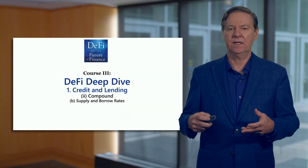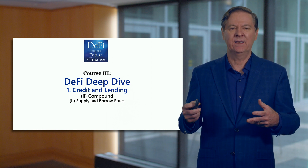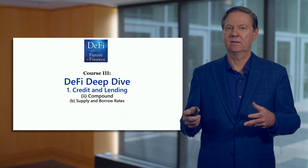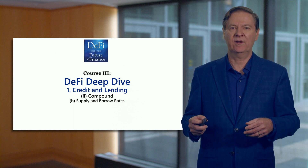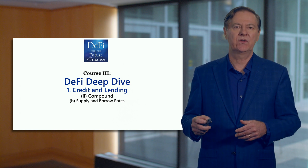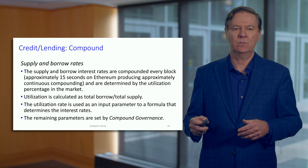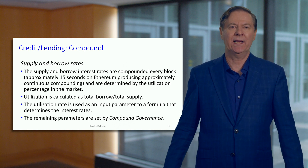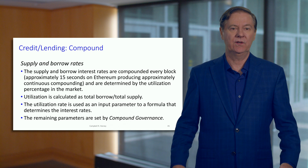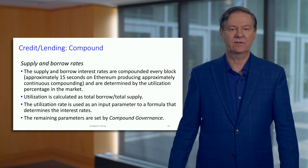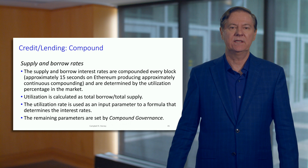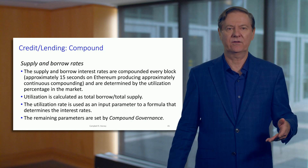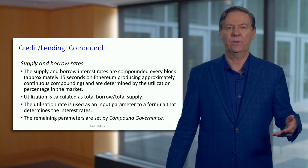The next thing in Compound that we need to understand is how supply and borrow rates are actually calculated. If you're supplying capital, you should get a rate of return, and if you're borrowing, you need to pay something. These rates are compounded every 15 to 18 seconds on the Ethereum blockchain, which produces something close to a continuous interest rate — mainly theoretical in traditional finance.